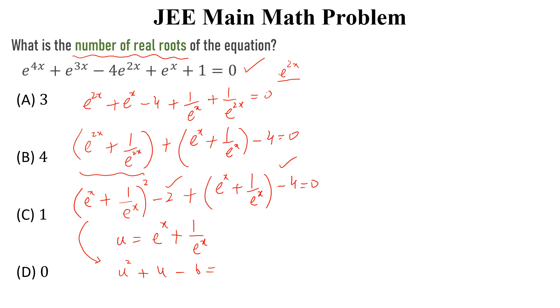So, minus 6 is equal to 0. This is a quadratic equation and if we solve this equation, we will get u is equal to 2 and u is equal to minus 3.